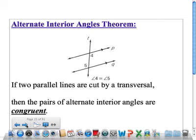The next theorem we're going to look at is called the alternate interior angles theorem. If two parallel lines are cut by a transversal, then the pairs of alternate interior angles are congruent. Same idea except now we're talking alternate interior.